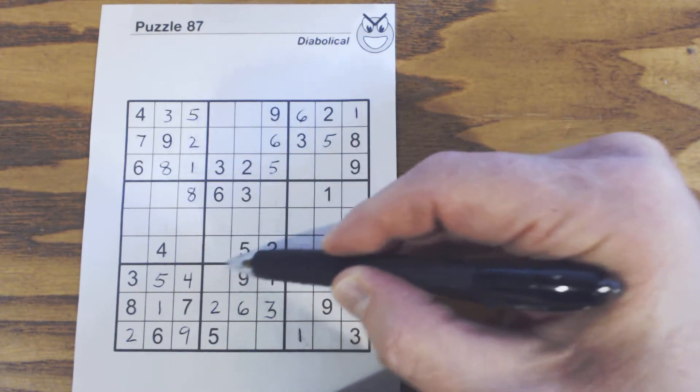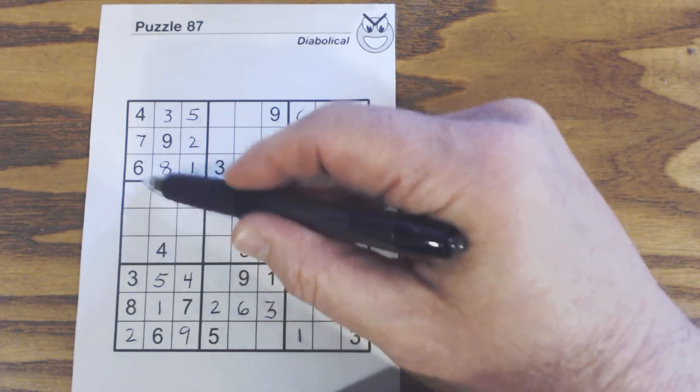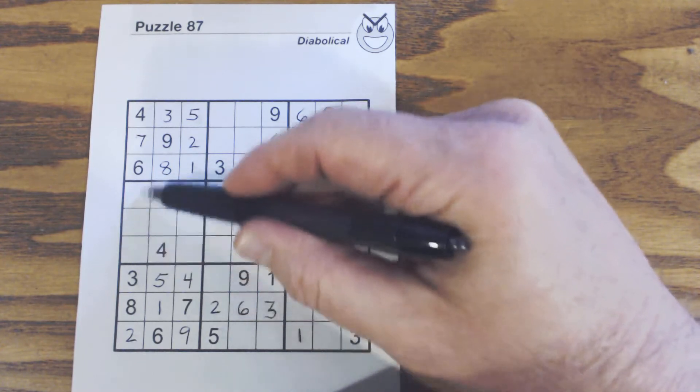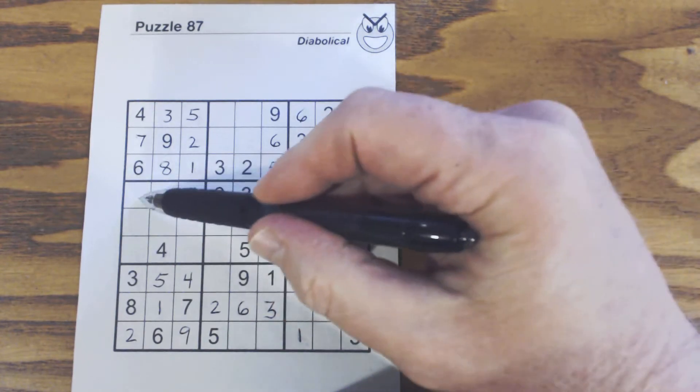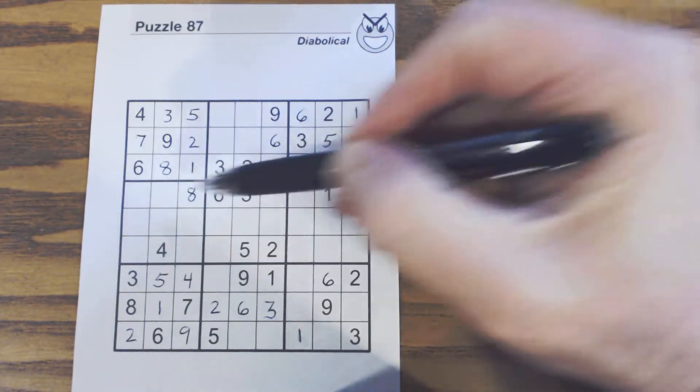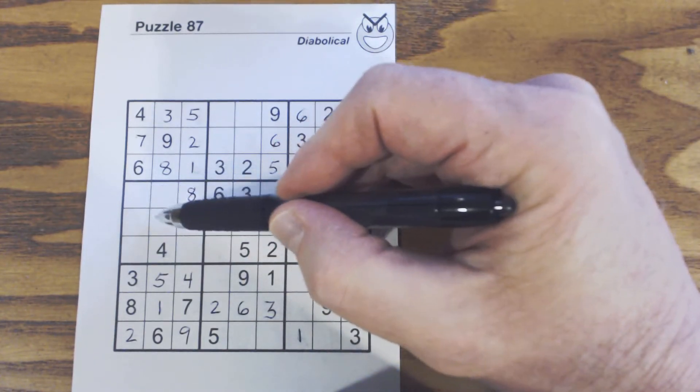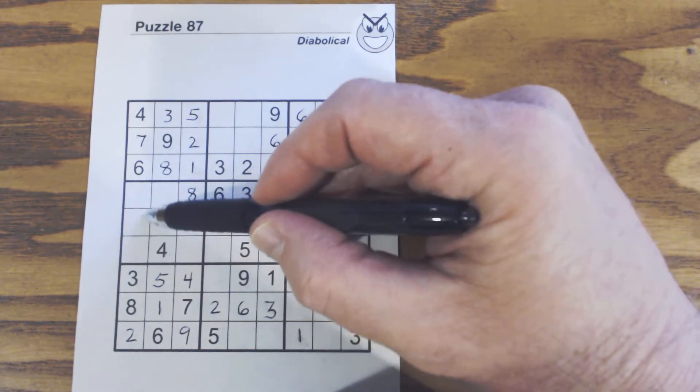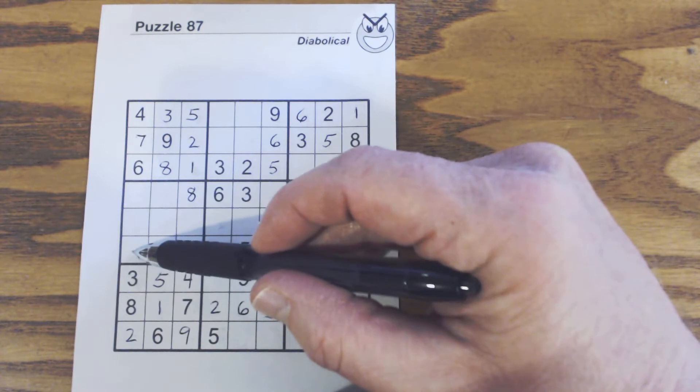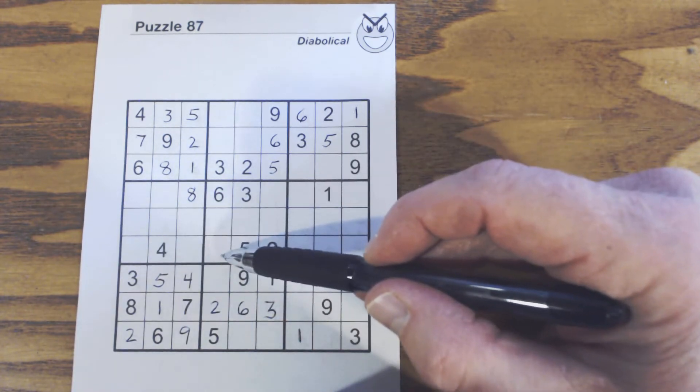But let's look at this 1-9 here in conjunction with these triplets right here. We got a 1-5-9 right here, there's a 1 here, so that's a 5-9. There's a 5 here, so that's a 1-9, and this is 1-5 or 9. So this 1-9 and this 1-9 are twins.